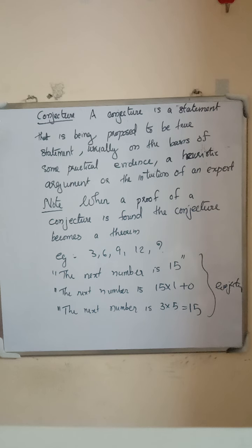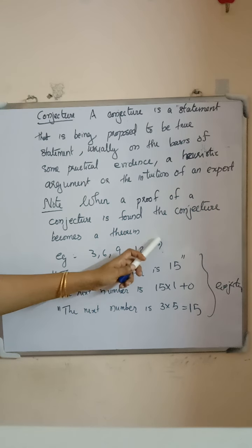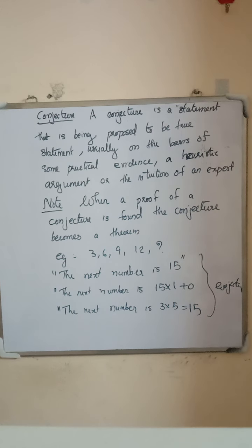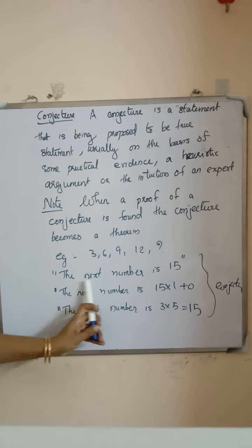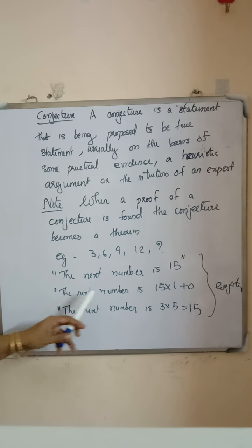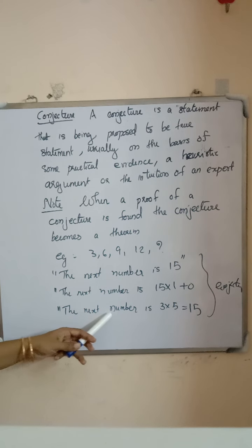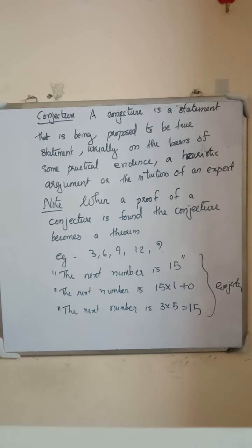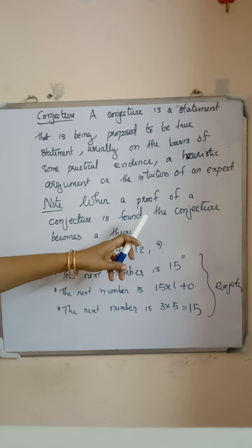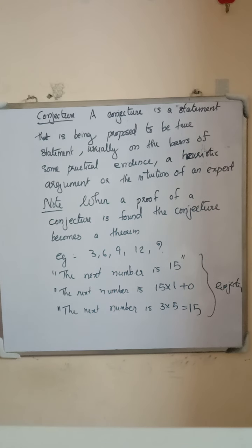Next, conjecture. A conjecture is a statement that is being proposed to be a true statement, usually on the basis of some practical evidence, a heuristic argument, or the intuition of an expert. For example, given the sequence 3, 6, 9, 12 — what is the next number? One student says the next number is 15. Another can say 15 × 1 + 0, and another says 3 × 5 = 15. All these statements are conjectures — proposed true statements based on practical evidence.